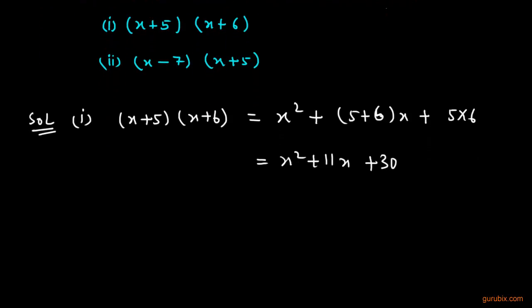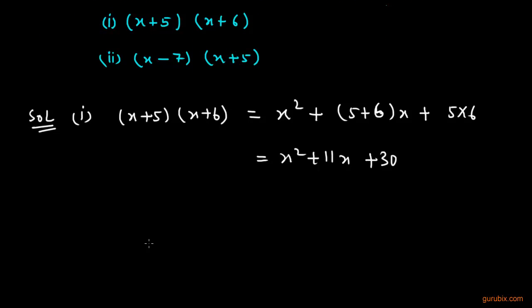Now we shall solve the second part of the example. The second part is (x - 7)(x + 5). First of all, we shall write x - 7 like this: x + (-7) into x + 5.